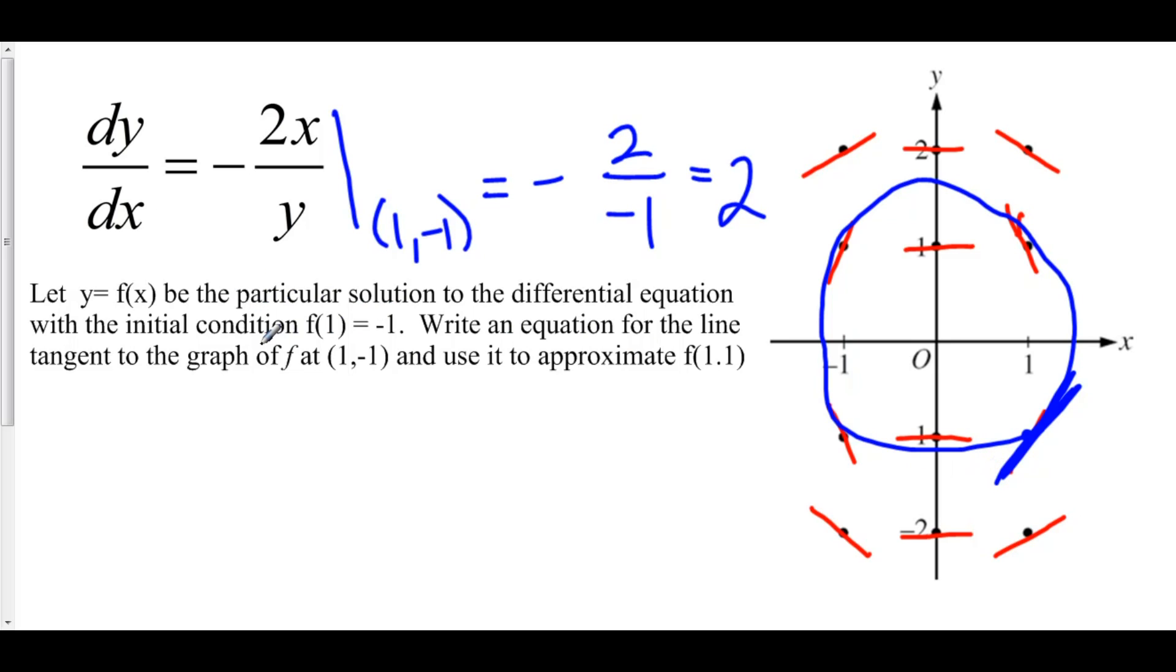They want us to find an equation for the line tangent to the graph at (1, -1). There are two things that we need for a tangent line: number 1, a point; number 2, a slope. They gave us the point, which is the particular solution (1, -1), and the slope we just found is positive 2. We could have also verified that by just looking at our slope field. We can use point-slope form to find the equation of this line, so we have y minus y1 equals m times x minus x1.